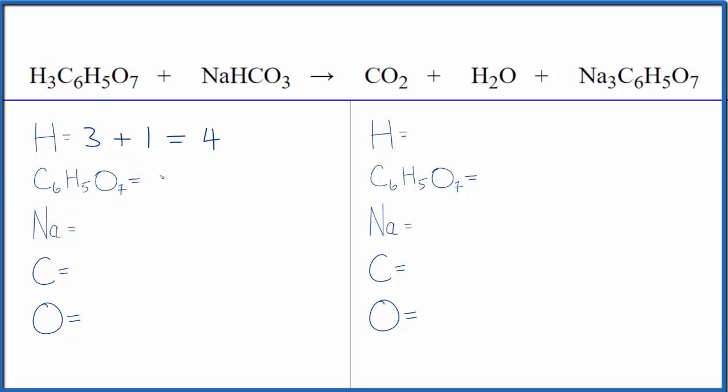On the product side we have two hydrogens here. We're going to ignore these, and we have our one citrate ion, three sodiums, one carbon, and two plus one, so we have three oxygen atoms. So now we can really see what we need to do to balance this equation.